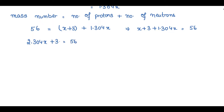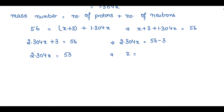When I take 3 to the other side of the equation, it changes its sign. So 2.304x equals 56 minus 3, which is 53. So 2.304x equals 53. To find the value of x, I take 2.304 to the denominator: x equals 53 divided by 2.304.